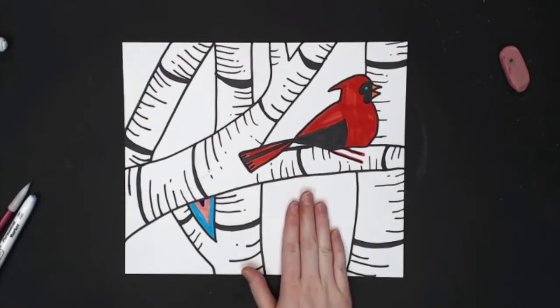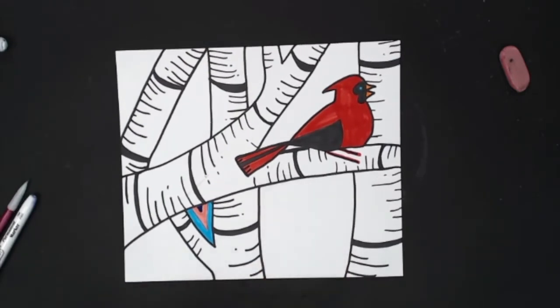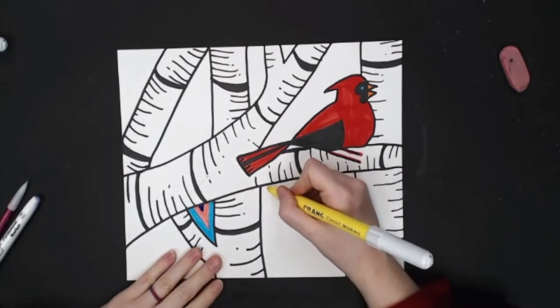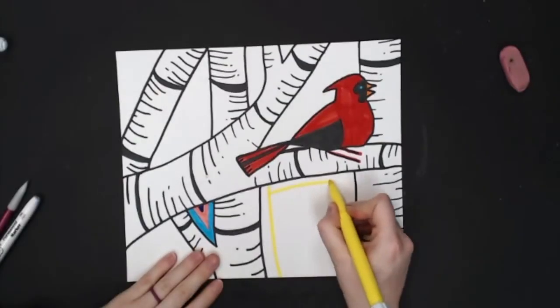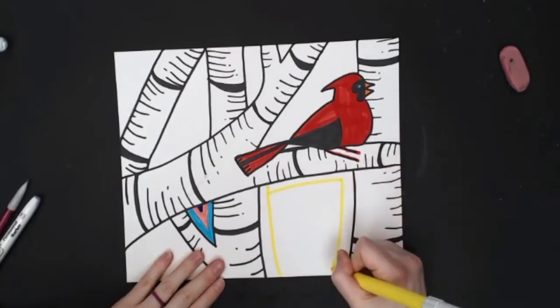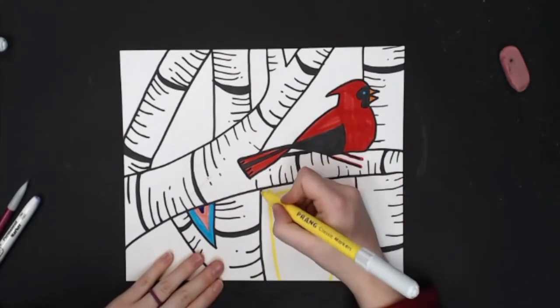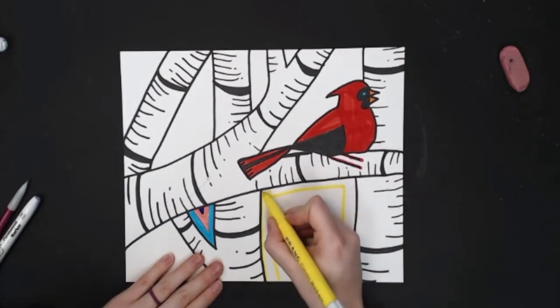So for this area, what I would do is I'm going to take my color and draw a line in that whole area, following the lines that are already there. And then I'm going to outline it and fill it in.